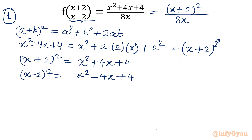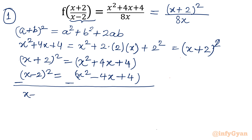Here you can easily observe: if I subtract both equations, the left-hand side would be (x+2)² minus (x-2)². On the RHS, x² minus x² = 0, then 4x minus (-4x) = 8x, and the constant terms cancel. So 8x can be written in terms of (x+2) and (x-2) as (x+2)² minus (x-2)².